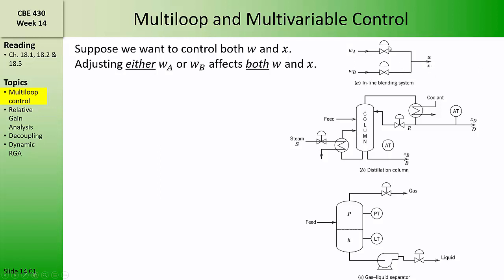Adjusting either WA or WB will affect both W and the composition X. Separation operations also frequently involve multiple controlled and manipulated variables. We've already looked at the distillation column as an example where we have multiple controlled variables and multiple manipulated variables.